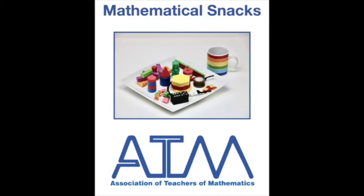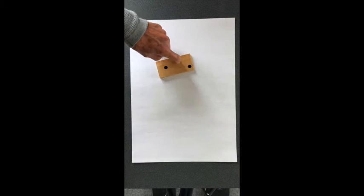This is a mathematical snack from the Association of Teachers of Mathematics. Here is a domino. A domino has two sections. In one section it's got a one in it and in another section it has two in it.